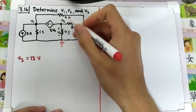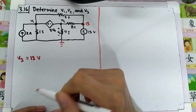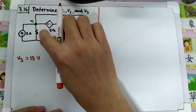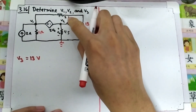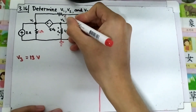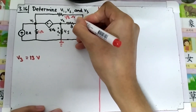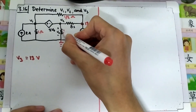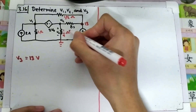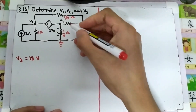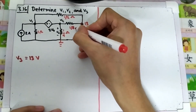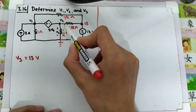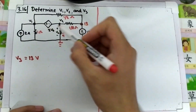We have all the resistances given in Siemens, so we need to convert them to ohms. 1 Siemens equals 1 ohm, 2 Siemens equals 1/2 ohm, 4 Siemens equals 1/4 ohm, and 8 Siemens equals 1/8 ohm. We are asked to find V1 and V2, since V3 is already known.